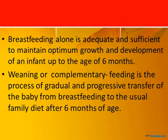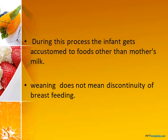Breastfeeding alone is adequate and sufficient to maintain optimum growth and development of an infant up to the age of six months. But after the age of six months, it is important that we start weaning or complementary feeding, and we need to start gradually. We need to start the family diet after the age of six months. During this process, the infant gets accustomed to foods other than mother's milk.